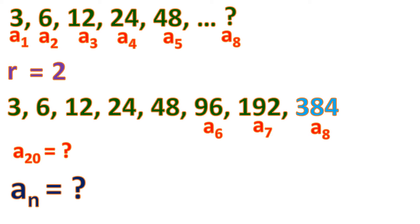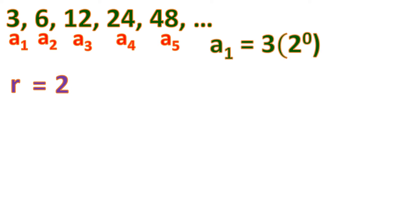So we're going to find a sub n, the general formula for a geometric sequence. Let's derive the formula. We have the sequence with the first through fifth terms and a common ratio of 2. The first term, a sub 1, is 3, which equals 3 times 1. Considering the common ratio, we can write this as 3 times 2 to the power of zero, because any number to the power of zero is 1.